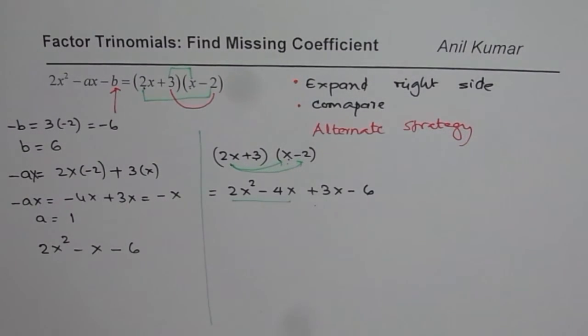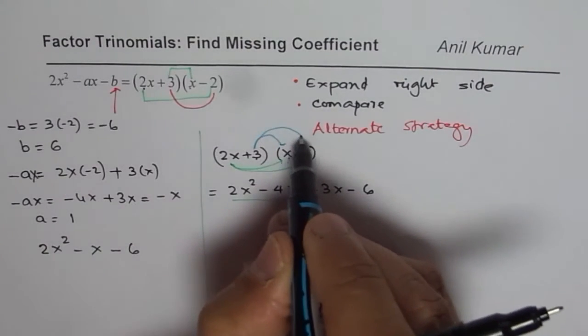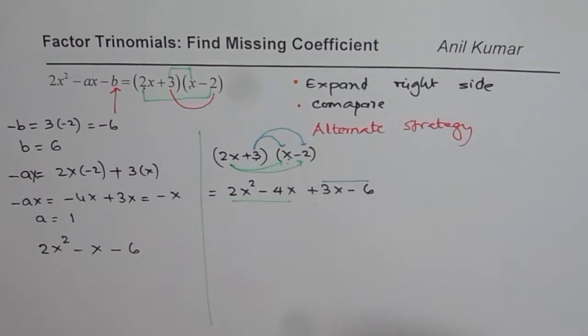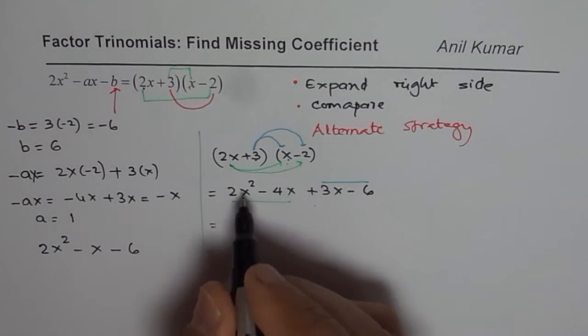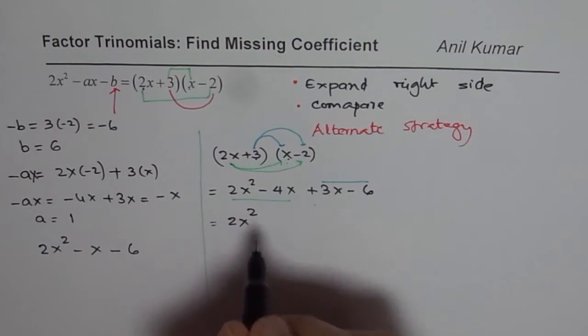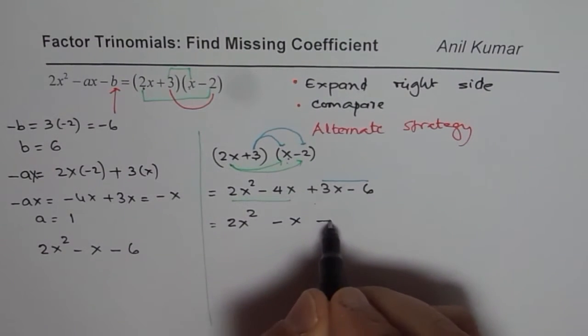The first two terms I got by multiplying 2x with x and -2. The next two terms I got by multiplying 3 with x and -2. Now you can combine the like terms. You get 2x² - 4x + 3x is -x, and -6.